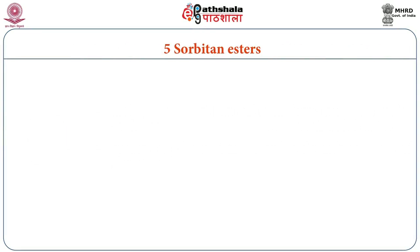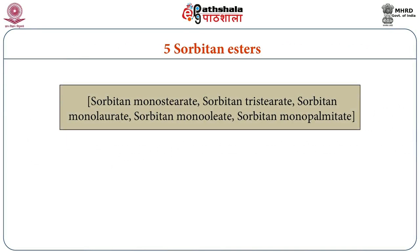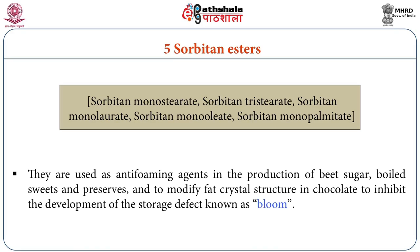The next ingredient includes five sorbitan esters: sorbitan monostearate, sorbitan tristearate, sorbitan monolaurate, and sorbitan monopalmitate. These sorbitan esters are used as anti-foam agents in the production of beet sugar, boiled sweets and preserves. They are also used to modify fat crystal structure in chocolate, which inhibits the development of the storage defect known as chocolate bloom.